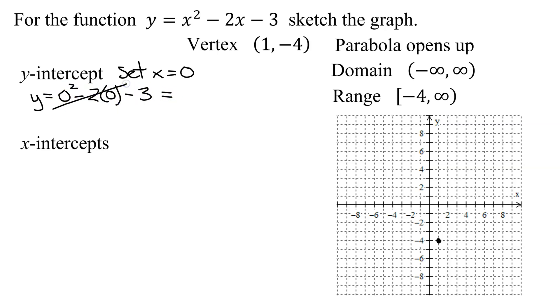So that means plug 0 into every x up here. So y equals 0 squared minus 2 times 0 minus 3. Well, these two go to 0, so it's negative 3. So the y-intercept is at 0, negative 3. So here's my y-intercept. Start at the origin, go down 3. There's my y-intercept.